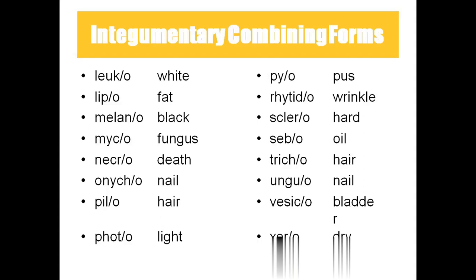Necro means cell death. Oniko means nails — both unguo and oniko refer to nails. Pilo means hair. Photo means light. Pio means pus. Raitido means wrinkles. Sclero means hard. Cebo means oil. Trico means hair. Unguo means nail. Vesico means bladder. Zero means dry.